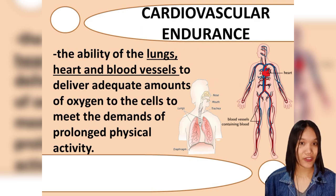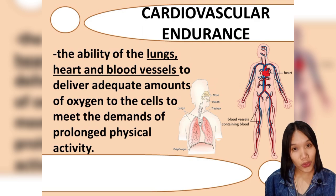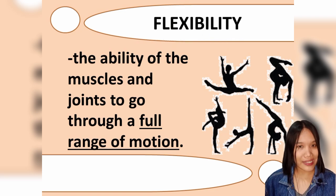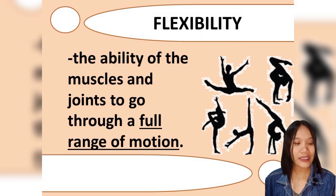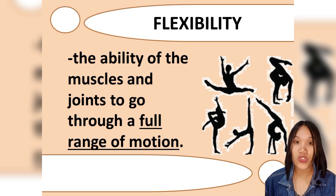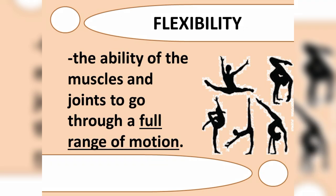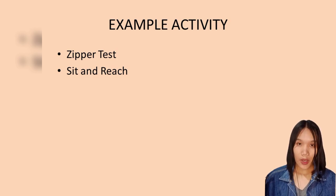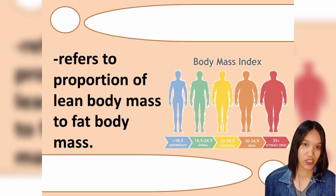Flexibility is the ability of the muscles and joints to go through a full range of motion. Example activities for measuring flexibility include the zipper test and the sit-and-reach test.